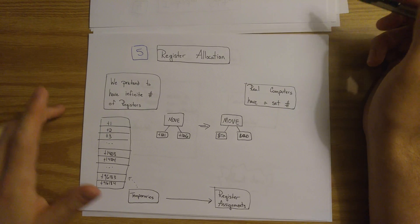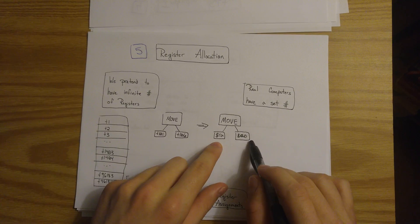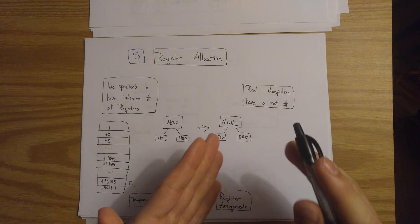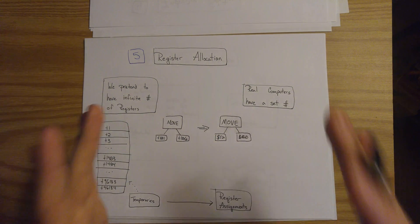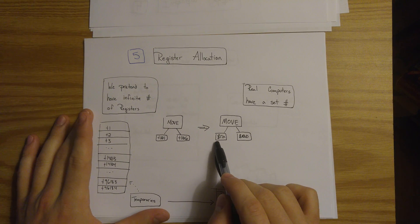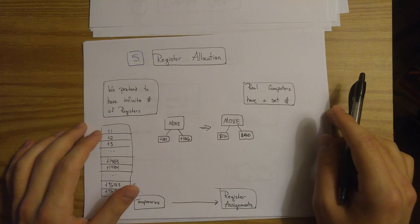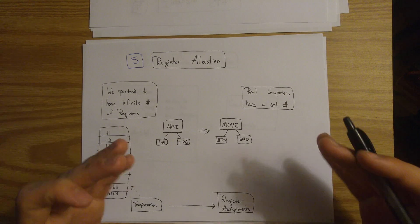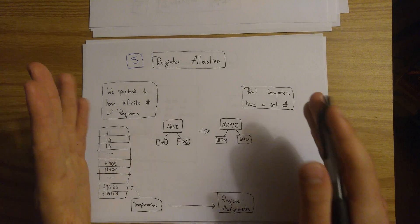So during register allocation, we take those temporary values and we assign them, we schedule them with real registers. So we only have a finite set of registers, and these values need to live in memory at given numbers of times. So one register will be used many thousands of times during a program and assigned many different values. So we need to make sure that the right values are never overwritten and are always available at the right times.